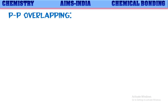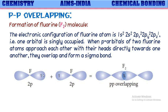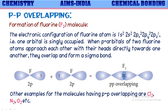Next, let us look at pp overlapping using the F₂ molecule as an example. The electron configuration of fluorine is 1s² 2s² 2px² 2py² 2pz¹ — with one singly occupied 2pz¹ orbital. When the p orbitals of two fluorine atoms approach each other with their heads directly towards one another, they overlap and form a sigma bond through pp overlapping. Other examples of molecules with pp overlapping sigma bonds include chlorine (Cl₂), nitrogen (N₂), and oxygen (O₂).